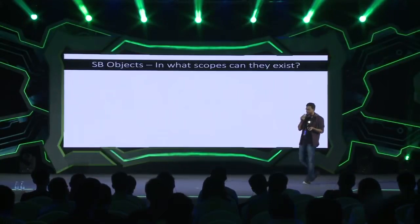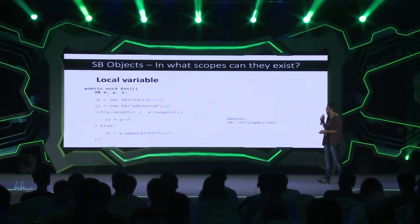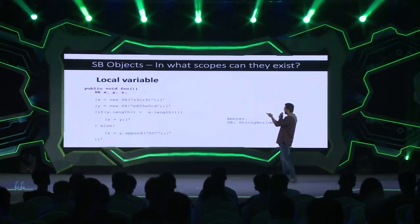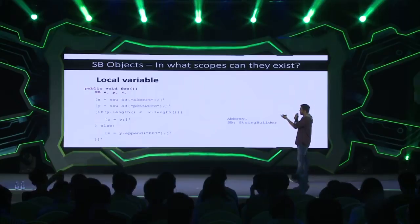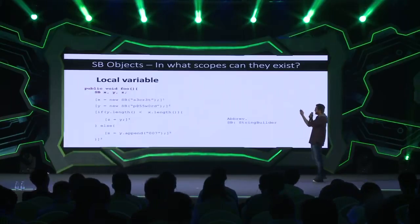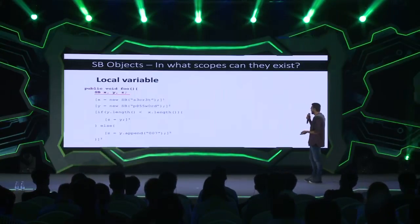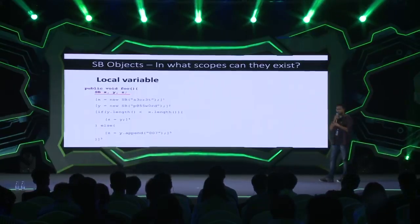Objects can exist in various scopes. They can exist as local variables inside a method — for example, x, y, z variables here contain StringBuilder objects, and their scope is limited to method foo only. They're not used outside this method anywhere.